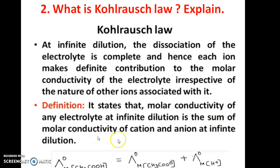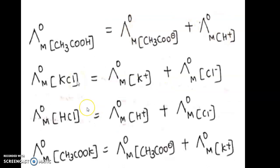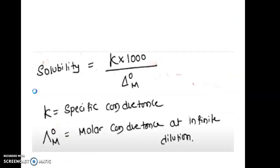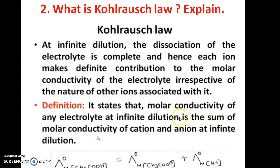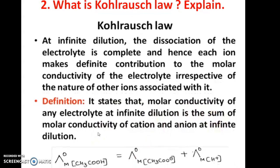This is called Kohlrausch's law. For example, the molar conductance of acetic acid at infinite dilution is equal to the molar conductance of its anion (CH₃COO⁻) plus the molar conductance of the H⁺ ion at infinite dilution. This is Kohlrausch's law.